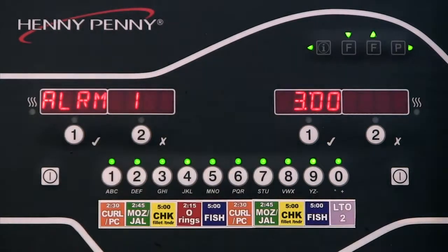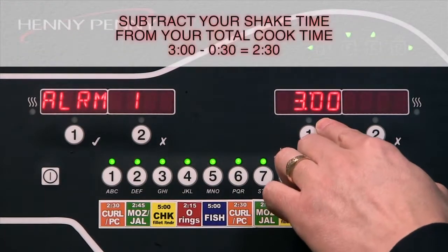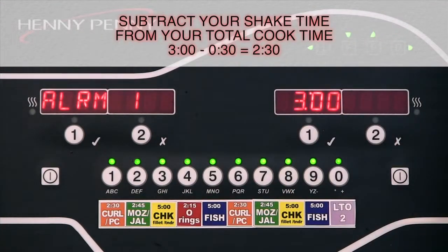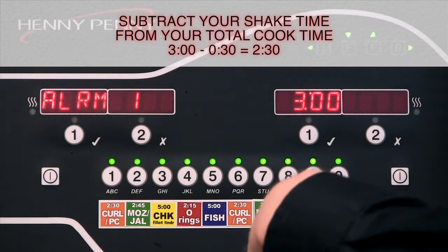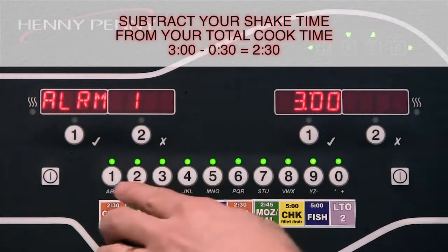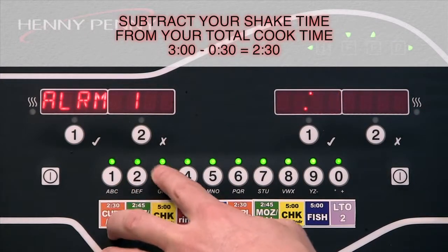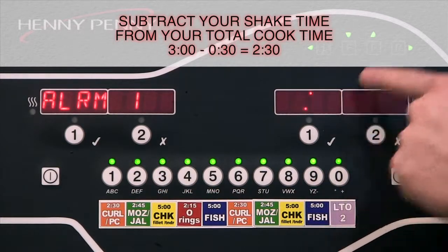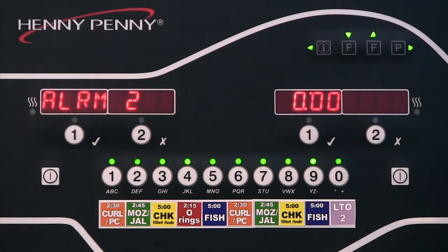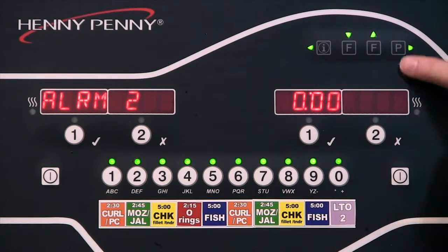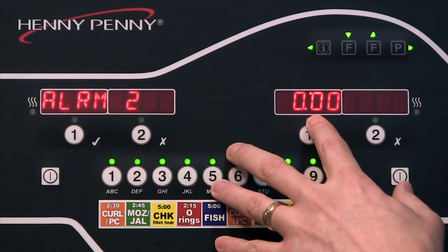Alarm 1, this is our shake timer. So our total cook time is 3 minutes. We're going to add a shake timer, so it tells us to shake the basket after 30 seconds. So I'd want that to happen at 2 minutes and 30 seconds. I'm just going to save that. Now we're going to have a shake timer at 30 seconds. Alarm 2, if we wanted to add another one, I could enter it here. We're going to keep that at 0.